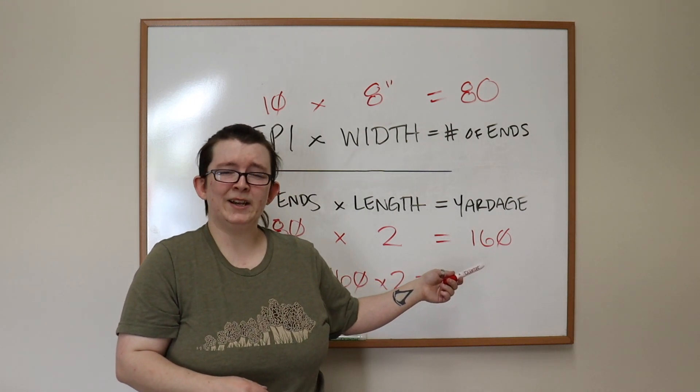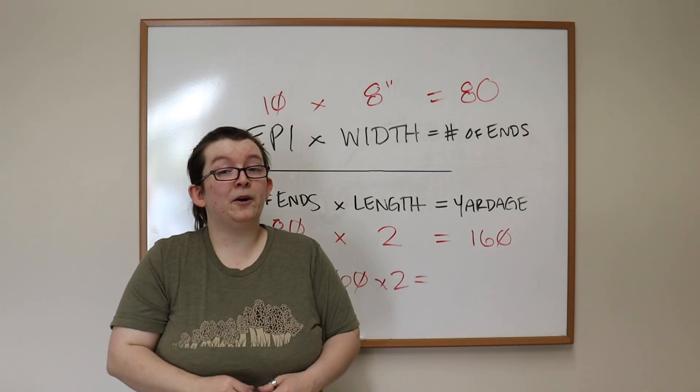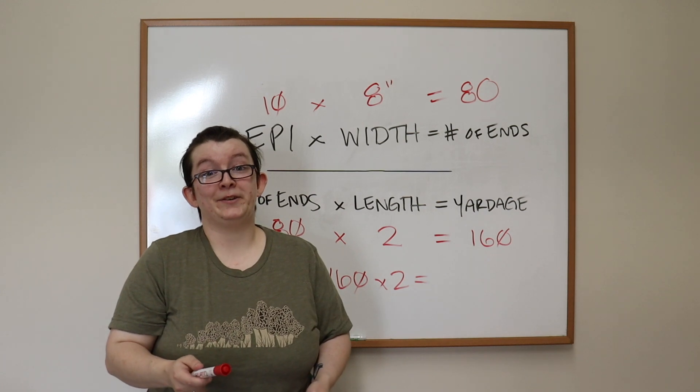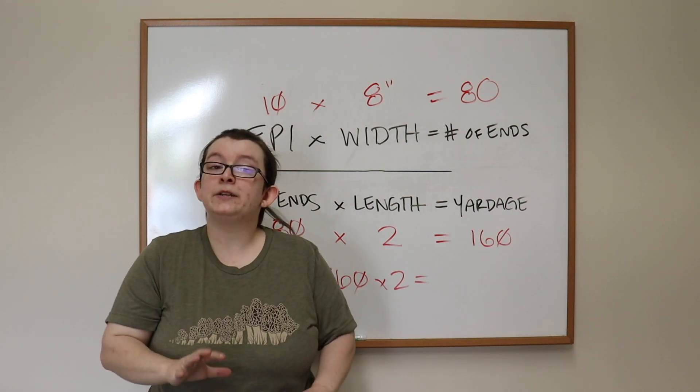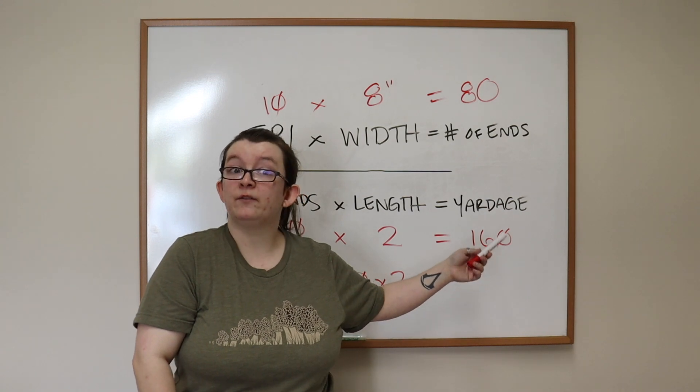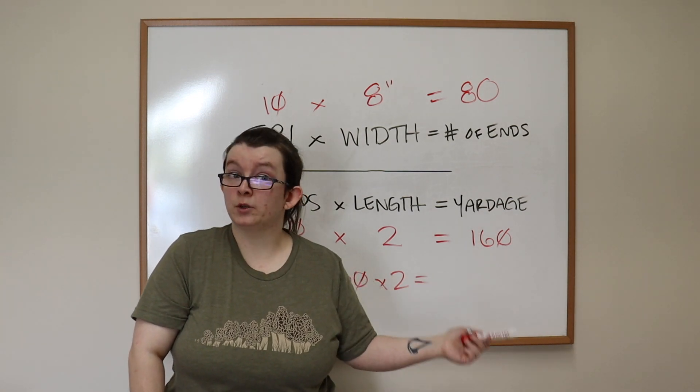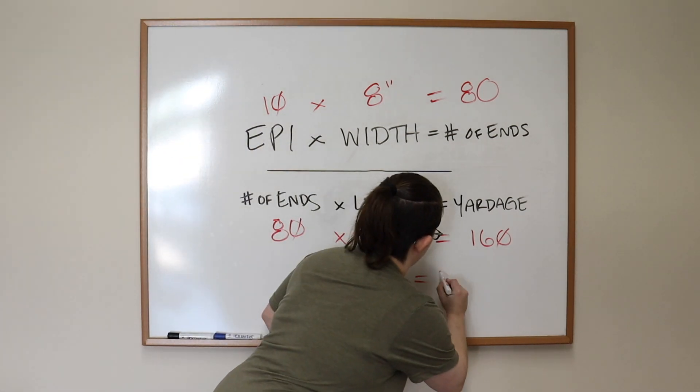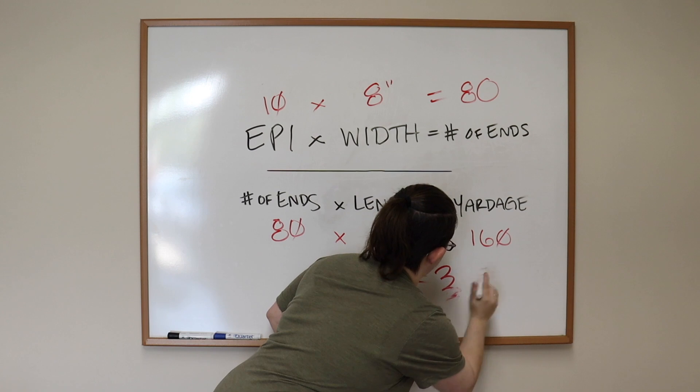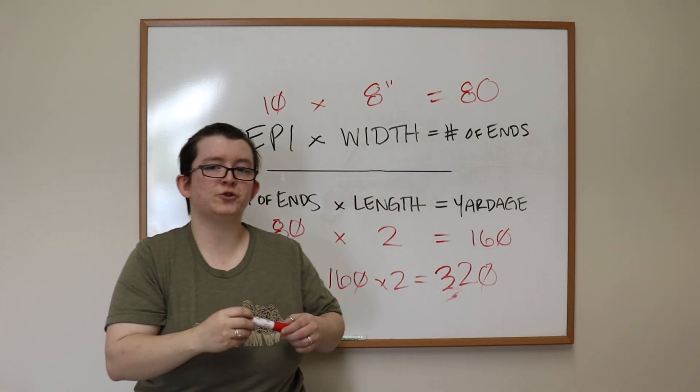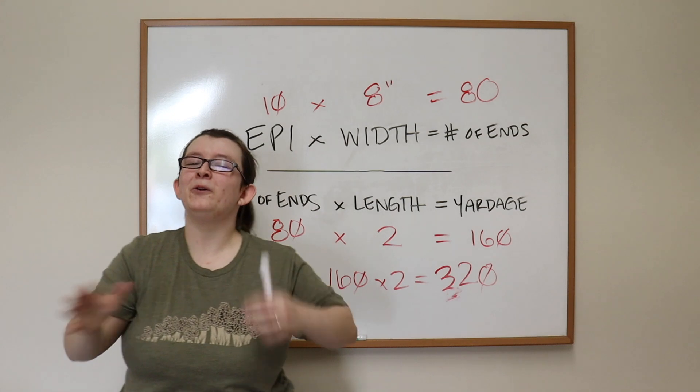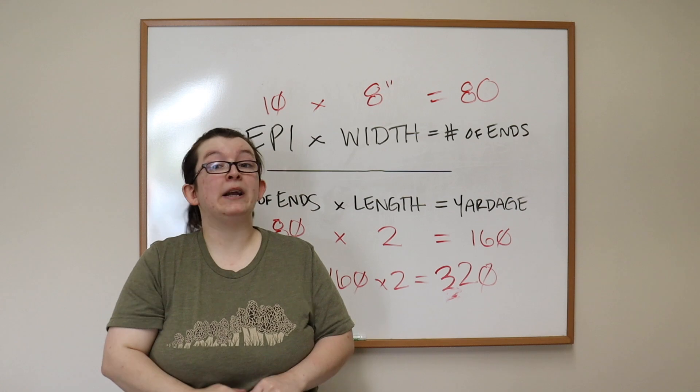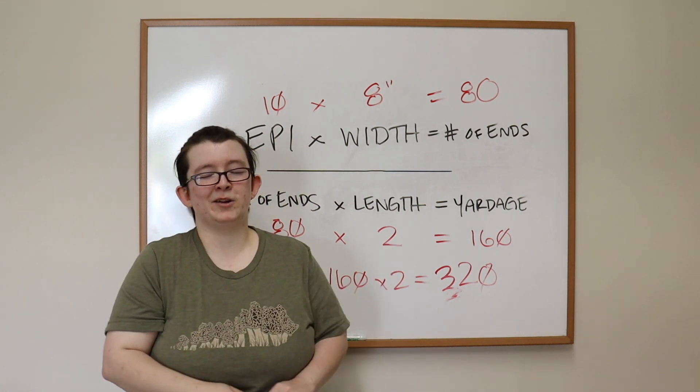All right. So we figured out how much we need for our warp. How much do we need for our weft? We talked about earlier how we have this whole other half of this thing that we have to do. And that basically answers our question. It is the easiest thing to assume that you're going to need just as much yardage for your weft as you do for your warp. So 160 times 2. Whoa. I know how to write. It's 320. So the whole amount of yardage that you'll need in total, warp and weft, is 320 yards for this fake project that we're doing right now.